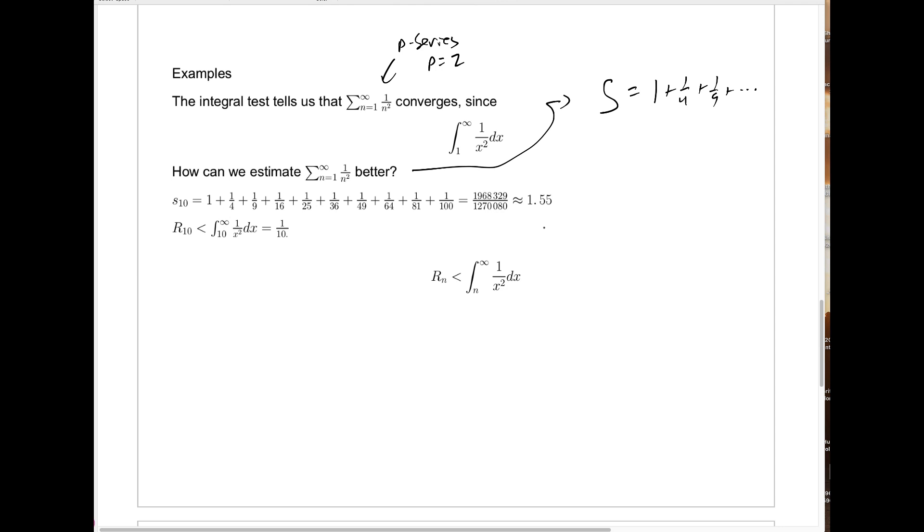So I claim the value of the series is approximately 1.55. But we know it's not exactly 1.55 because I've skipped all the rest of the terms. In fact, we know 1.55 is an underestimate. But how much? We still have an infinite number of terms to go. If I add the rest of those terms together, will that give me a huge amount extra to add to this, or maybe just a tiny amount? It would be nice to know that if I'm going to claim that this number, 1.55, is a reasonable estimate for the actual sum S.